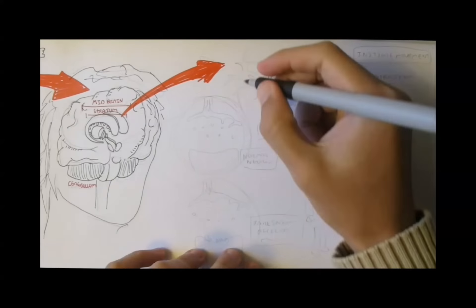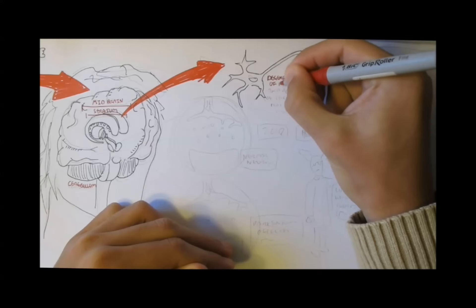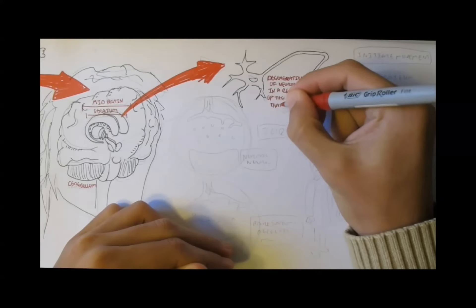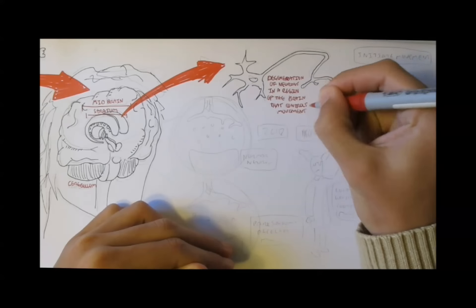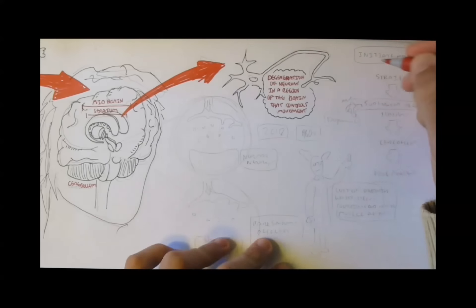If we take a close look at a Parkinson's disease patient's striatum, we see a degeneration of neurons in the region of the brain that controls movements. It is important to understand the physical mechanisms behind human movement before attempting to understand the cause of this disorder.